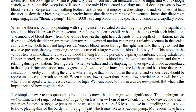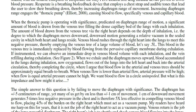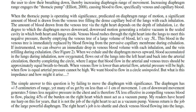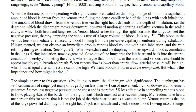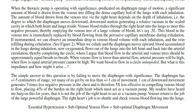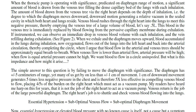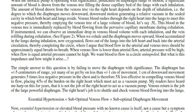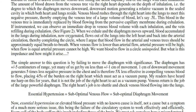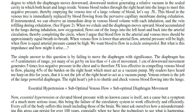Venous blood rushes through the right heart into the lungs to meet this negative pressure, thereby emptying the venous tree of a large volume of blood — let's say 0.5 liters. This blood in the venous tree is immediately replaced by blood flowing from the pervasive capillary membrane during exhalation. If instrumented, we can observe an immediate drop in venous blood volume with each inhalation and the vein refilling during exhalation. When we exhale and the diaphragm moves upward, blood accumulated in the lungs during inhalation — now oxygenated — flows out of the lungs into the left heart and back into the arterial circulation, thereby completing the circle, where I argue that blood flow in the arterial and venous trees should be approximately equal breath to breath.